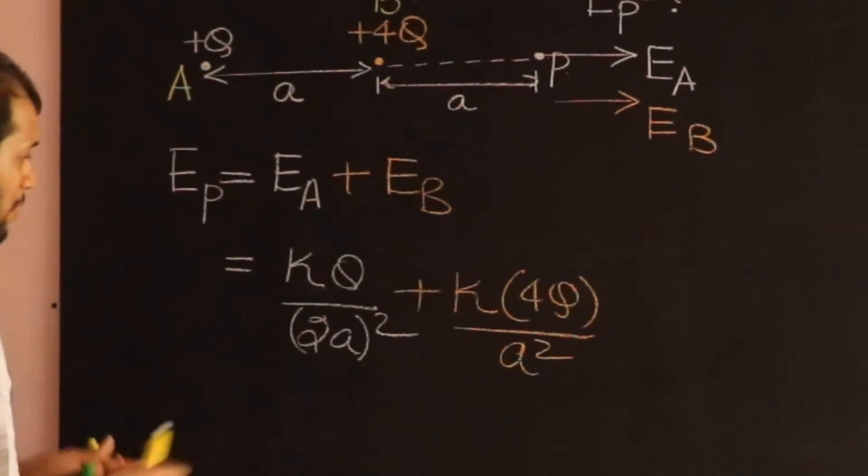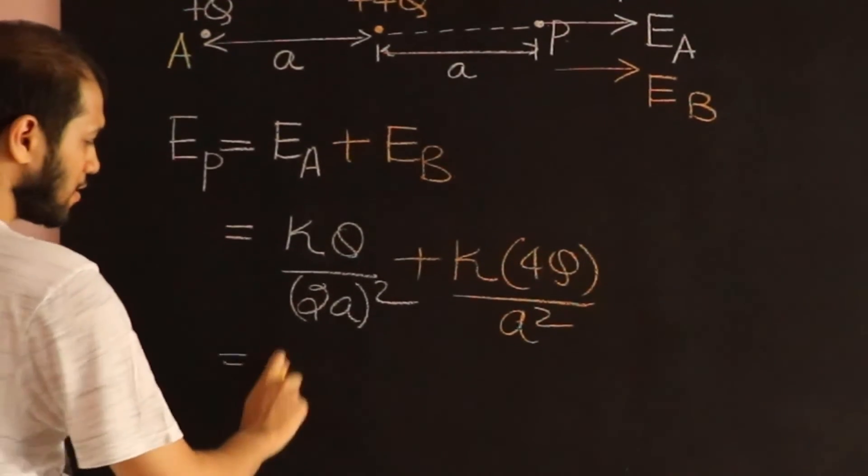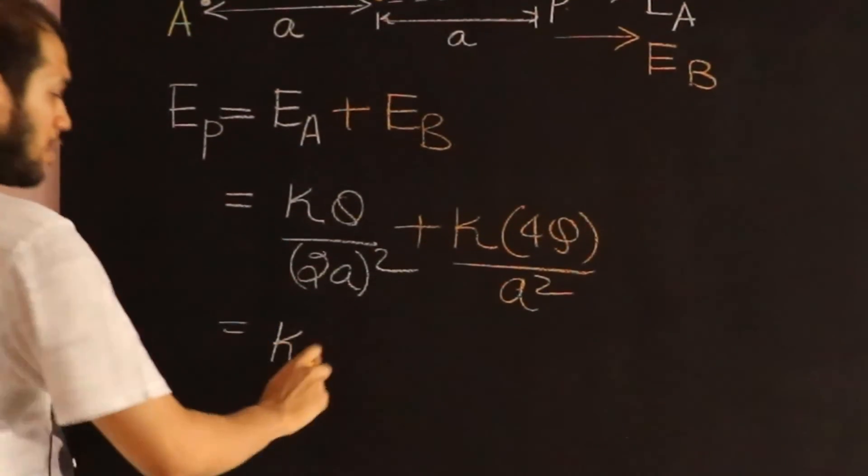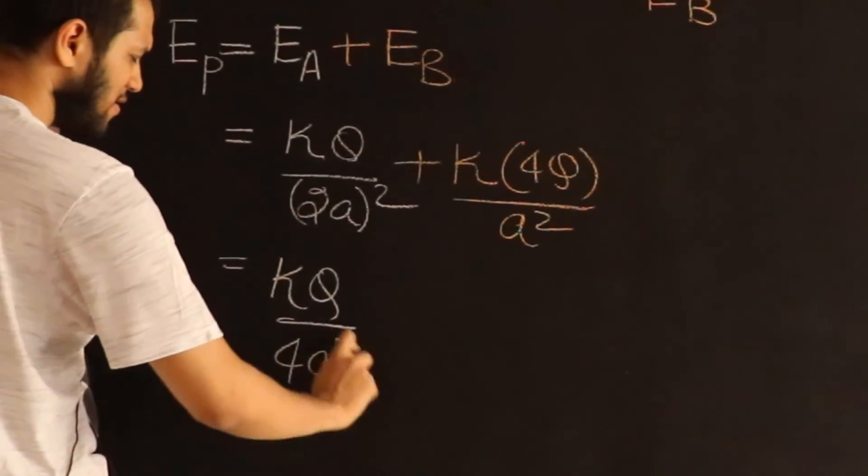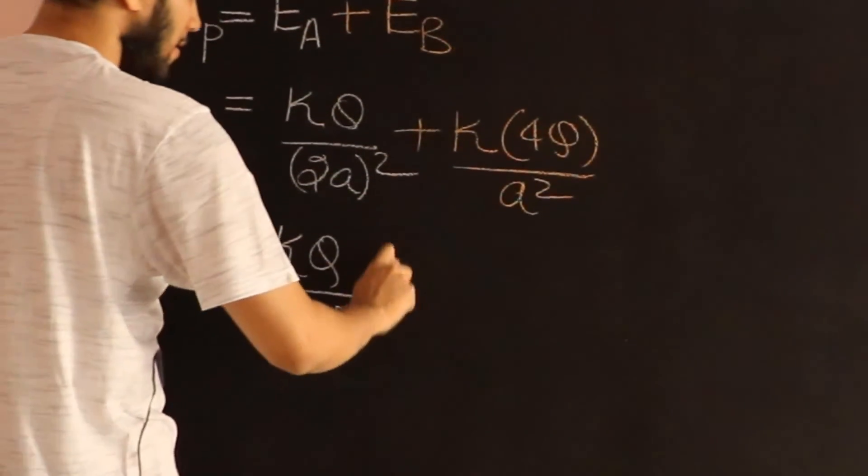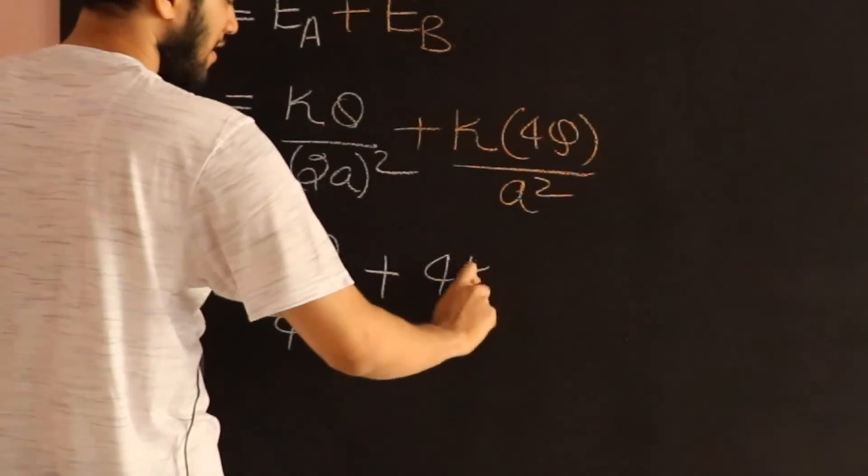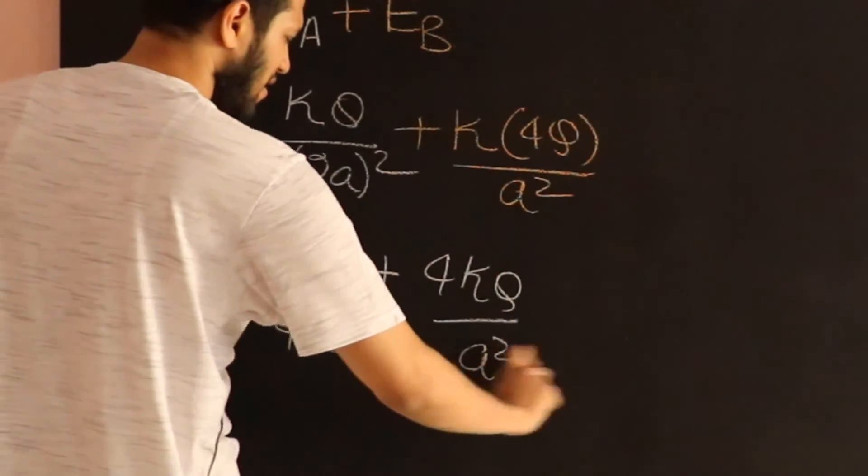And so now, we can just add them together. You get K common, Q is common. Let me just simplify that. KQ by 4A squared plus 4KQ by A squared.